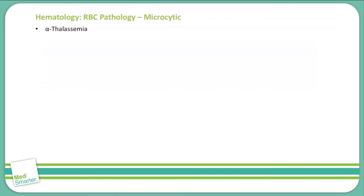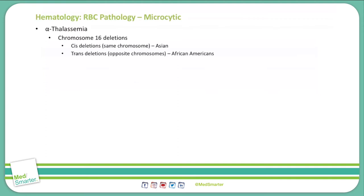Alpha thalassemia is a deletion on chromosome 16. There are two different types of deletions in alpha thalassemia minor: cis deletions, which are on the same chromosome and are often seen in Asian populations, and trans deletions, where the deletion is on opposite chromosomes, which are often seen in African Americans. Both occur on chromosome 16.